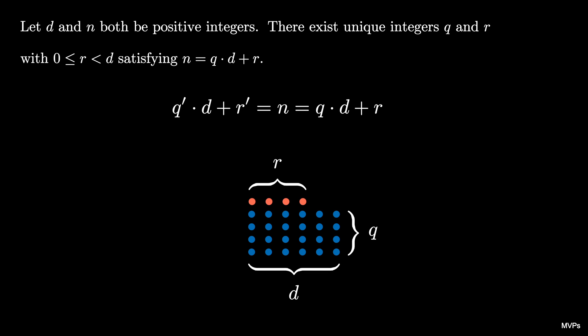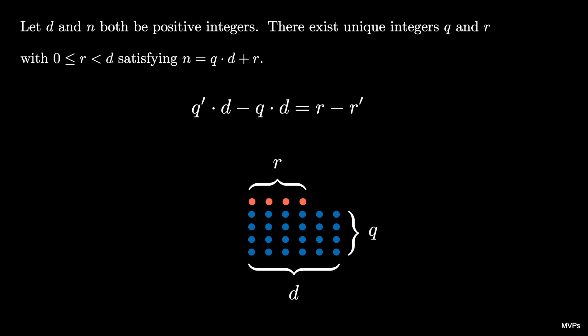Because these two are equal we can subtract to see that q prime times d minus q times d is equal to r minus r prime.